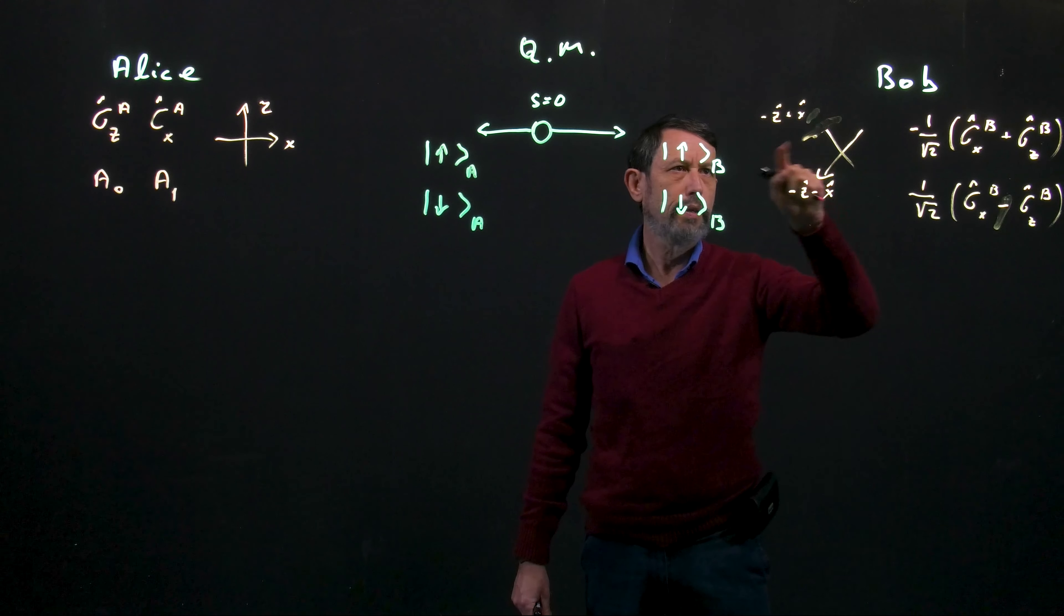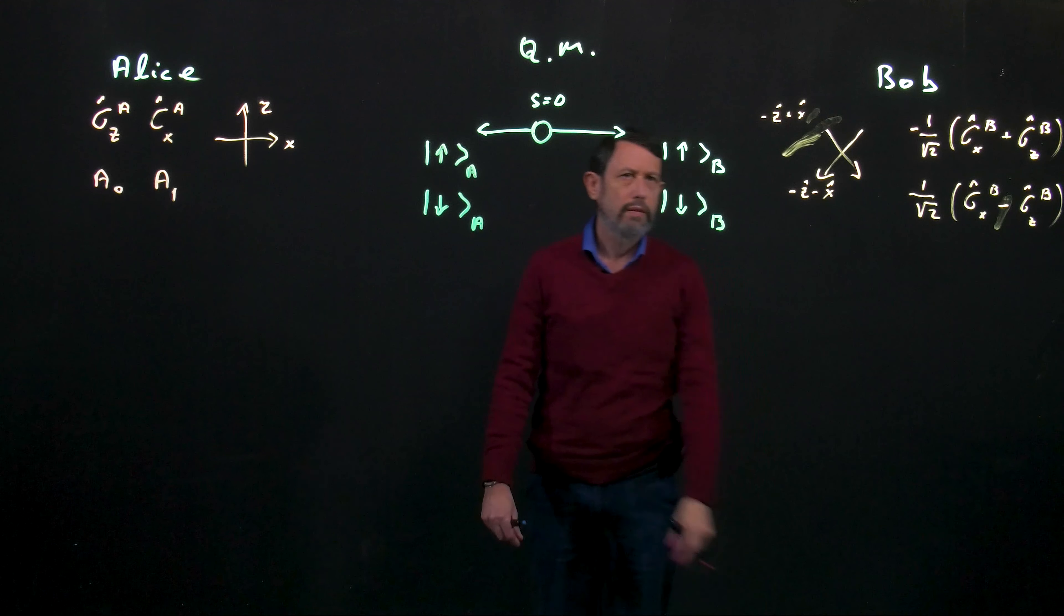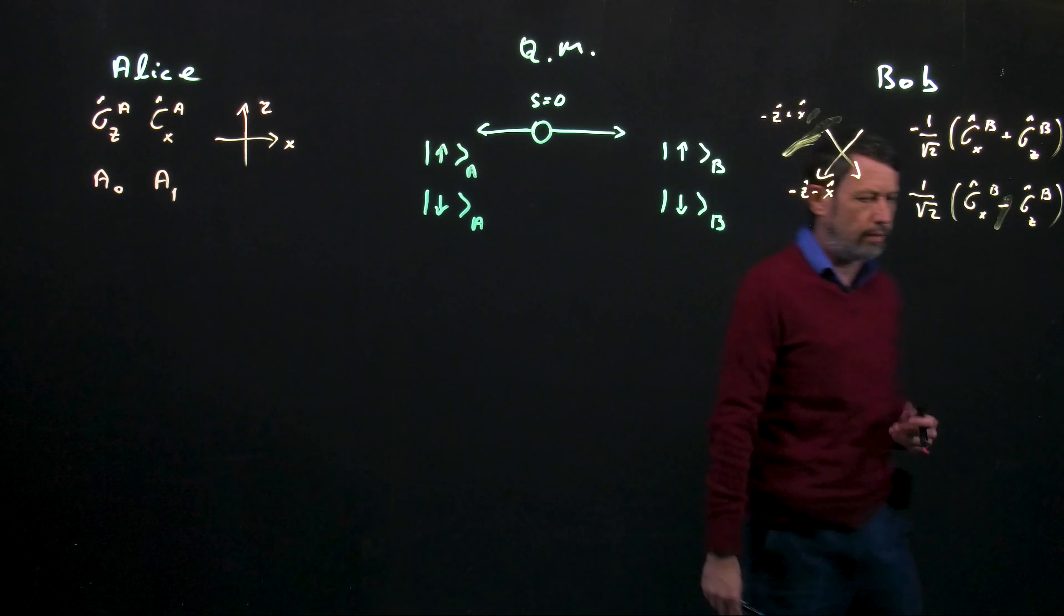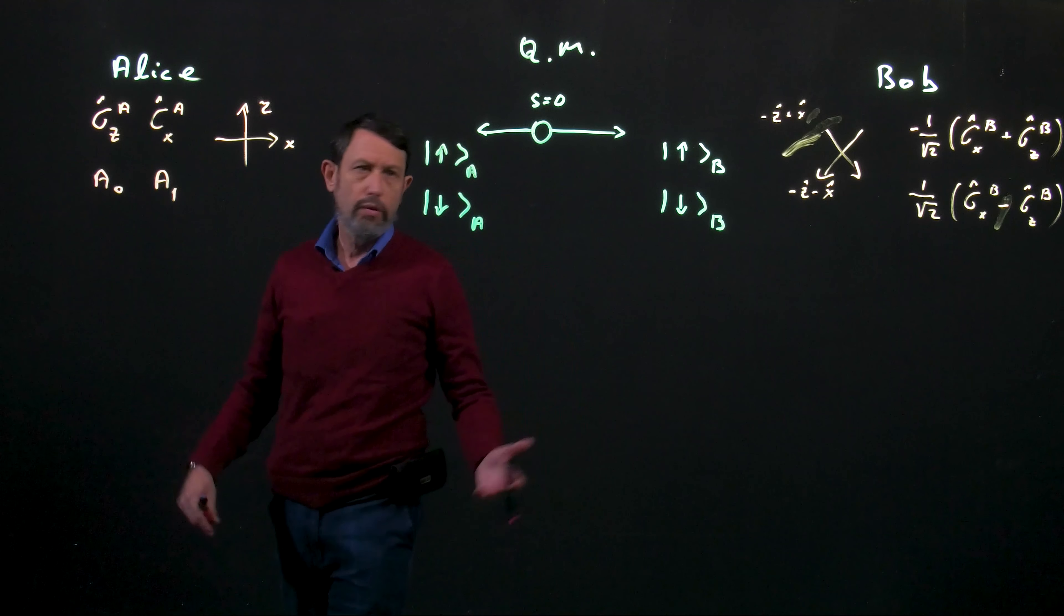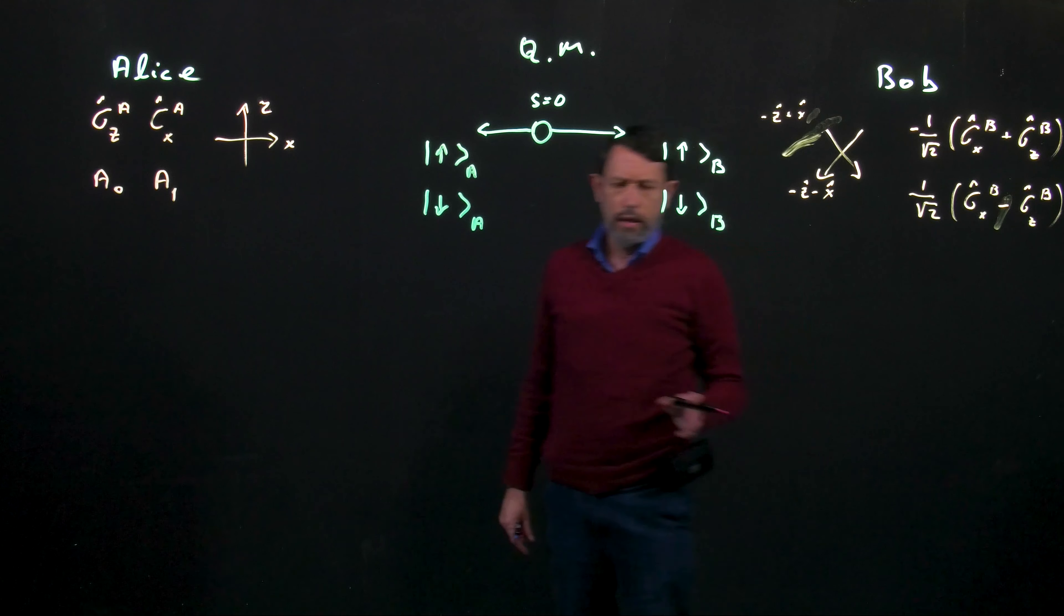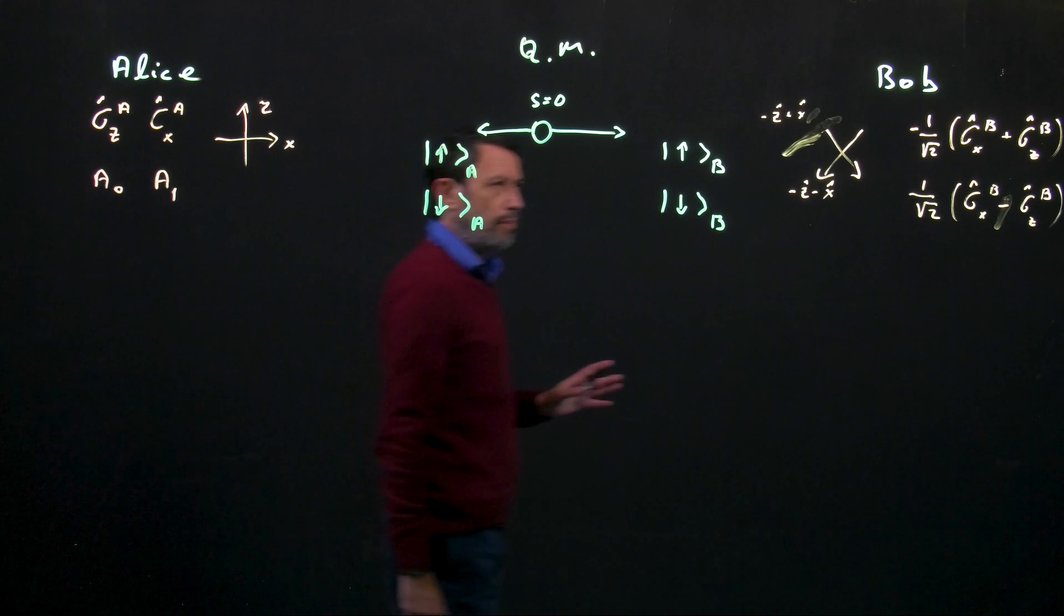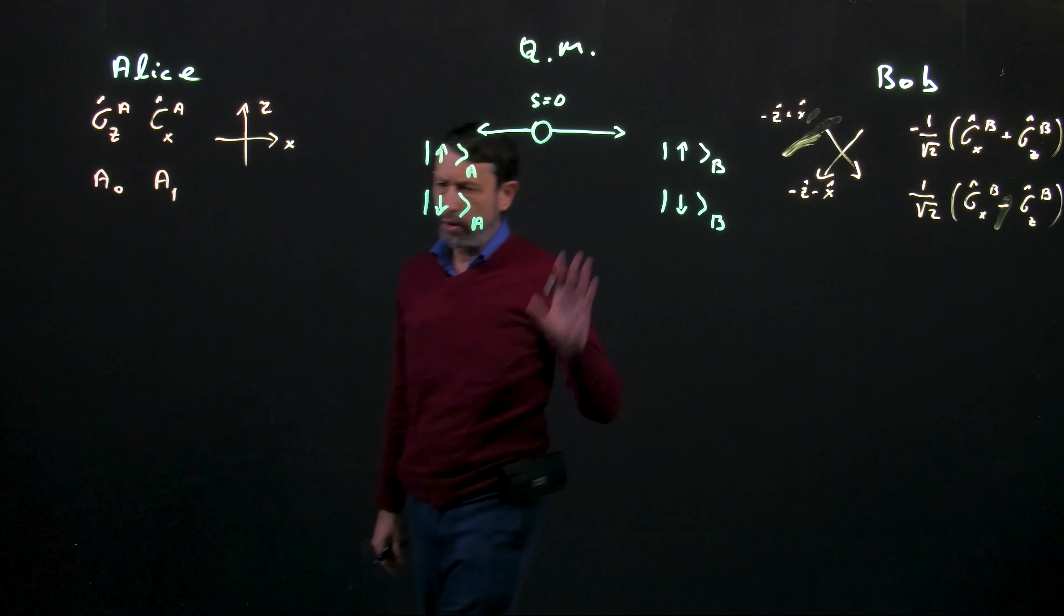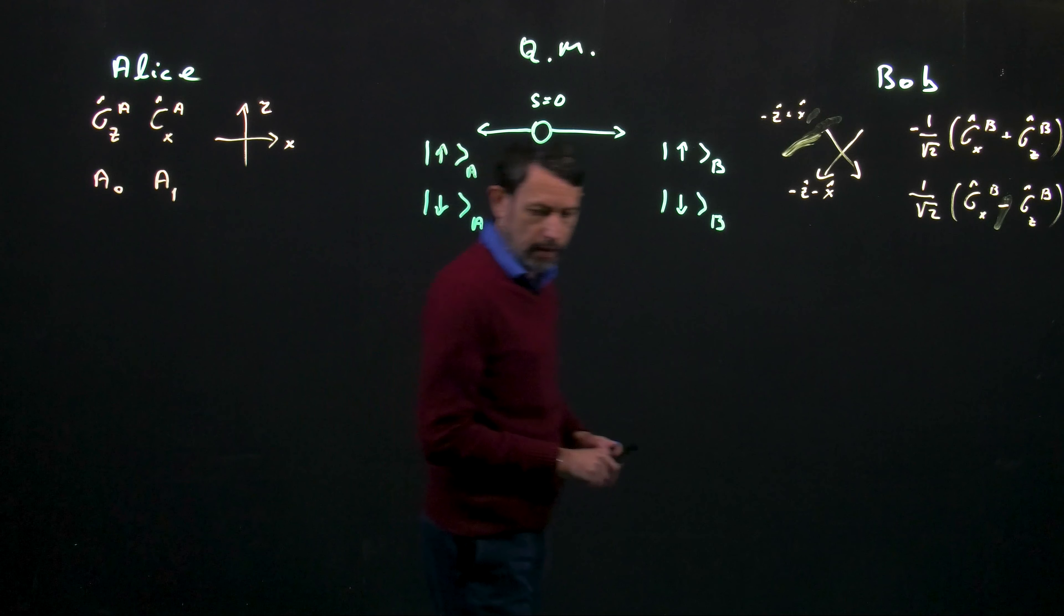And to be more precise, I'll write it in that way. Okay, the directions that we have chosen are of course random. We could have chosen any other direction. The angle is also not important as long as it's different than the measurement of Alice. But 45 degrees is convenient for the calculation.